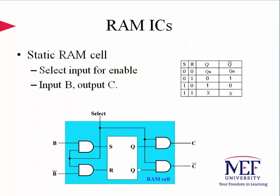A static RAM cell consists of an SR latch and four NAND gates. The select input is used to enable the latch operation. If B and B' are used in an ordinary sense — for example, B is 0 and B' is 1, or vice versa — we can use write functionality to fill the cell with data. If both B and B' are 0, then it can be used to output the stored value, enabling the read functionality. There is also a table provided for convenience to verify how this bit cell functions.